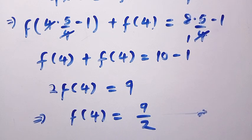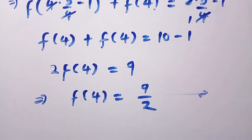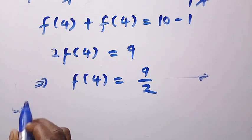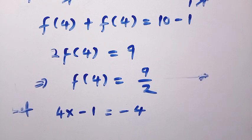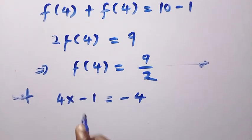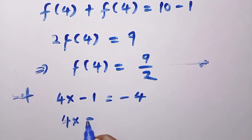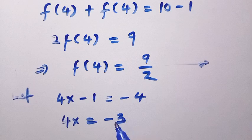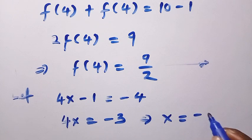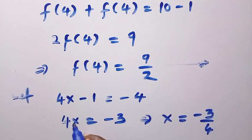Now after getting f of 4, let's try letting 4x minus 1, the domain of the first function, equal to minus 4. We make x the subject of the formula. So we have 4x equals minus 3, because when minus 1 moves to the other side it becomes positive, and minus 4 plus 1 is minus 3. This implies x equals minus 3 divided by 4.